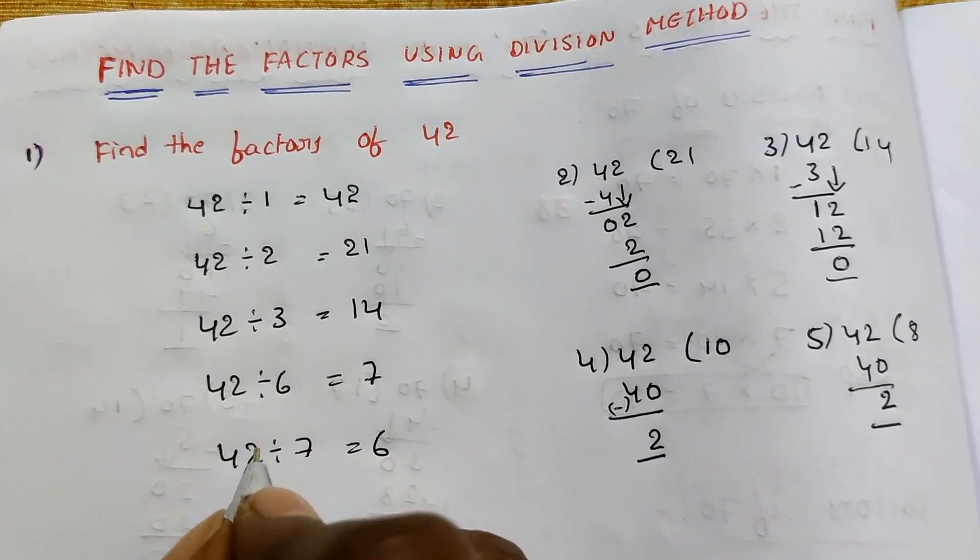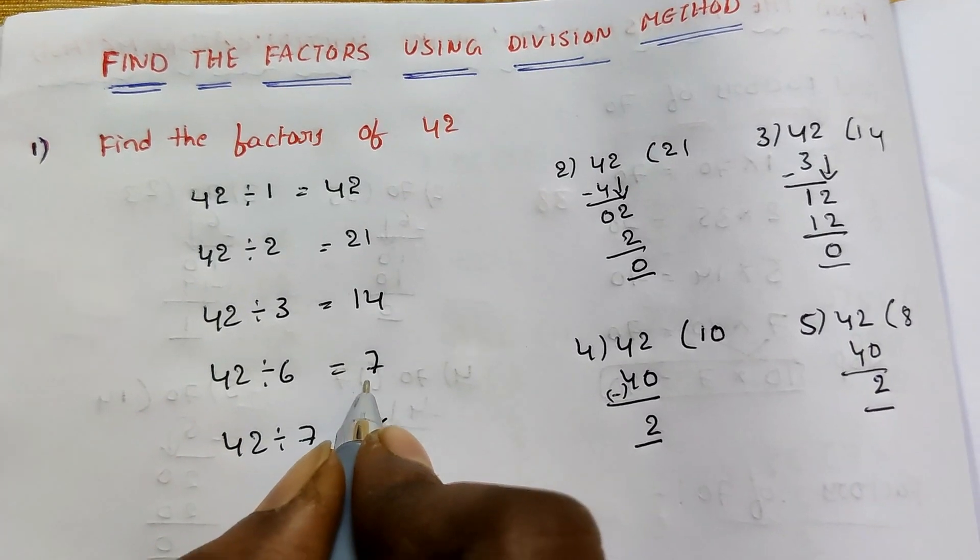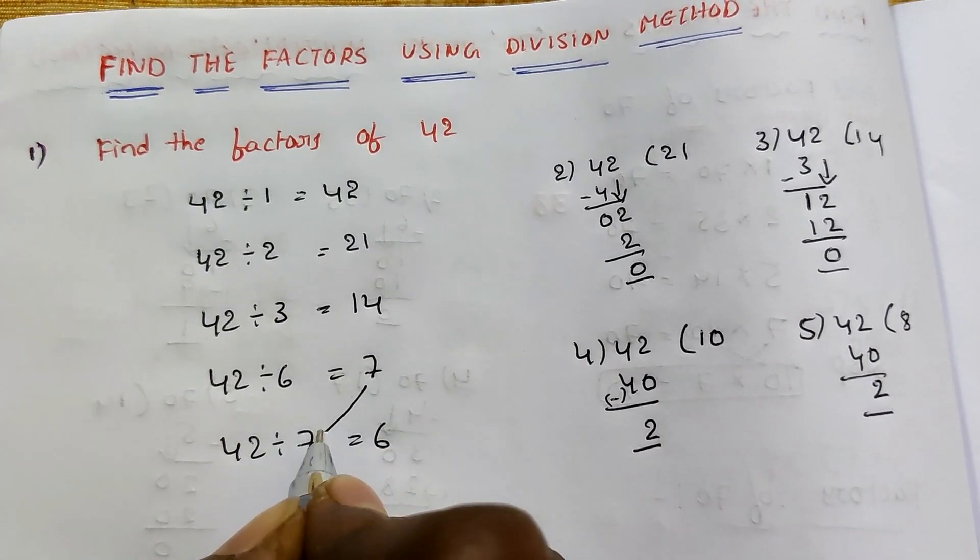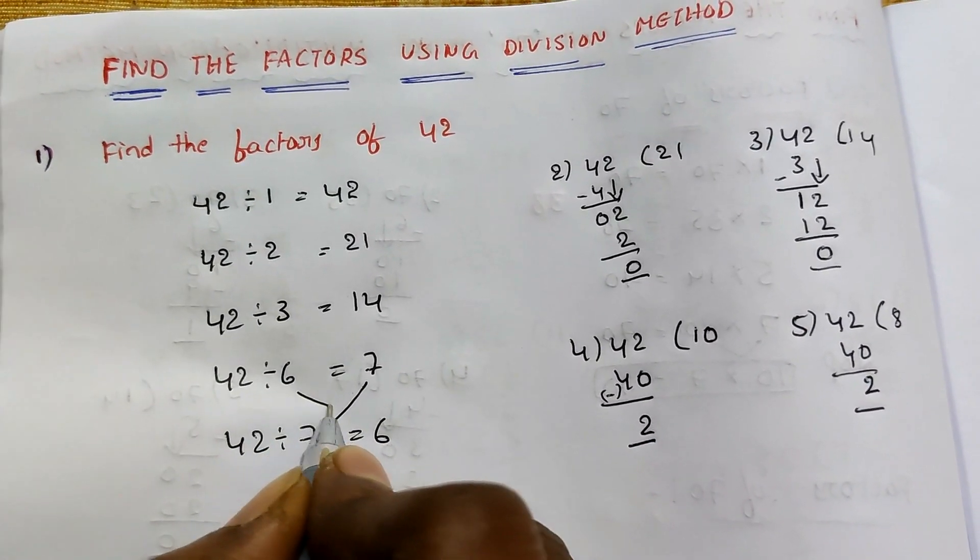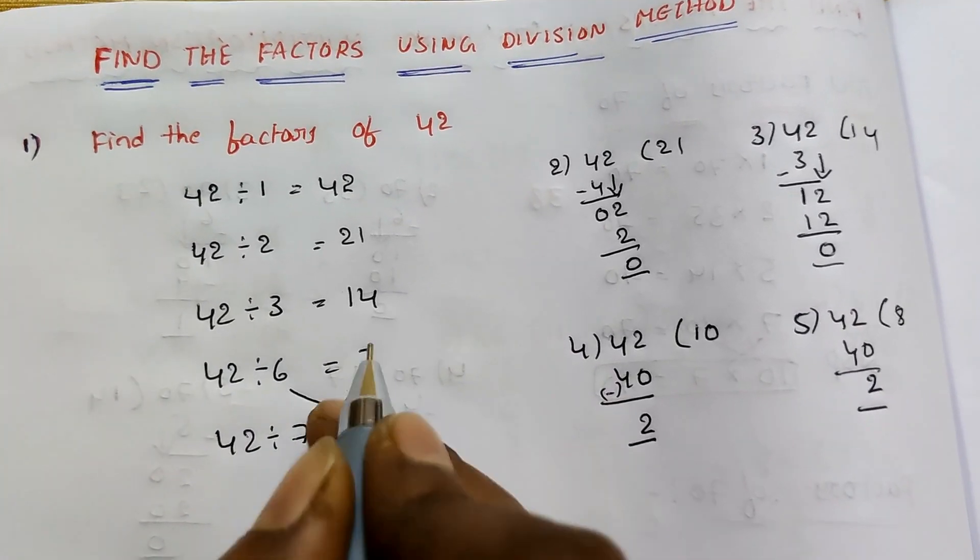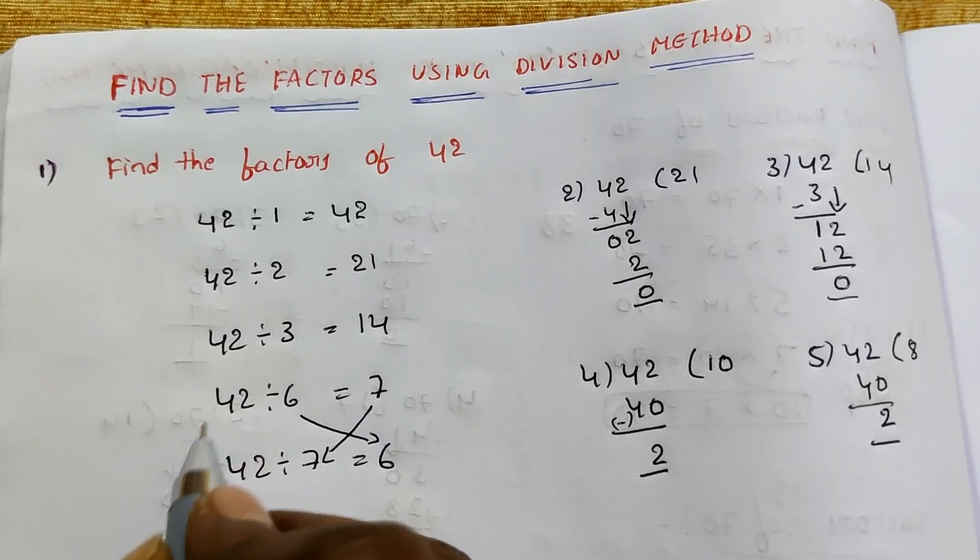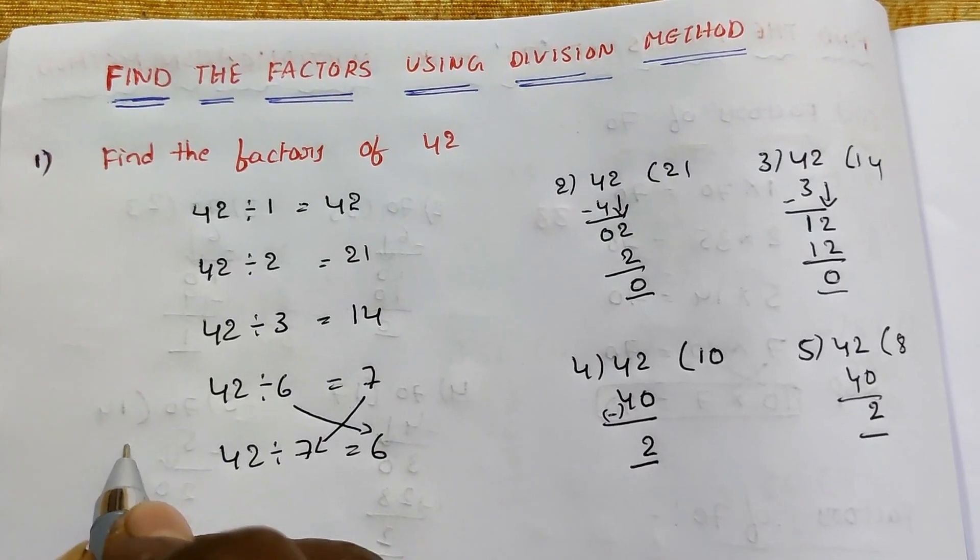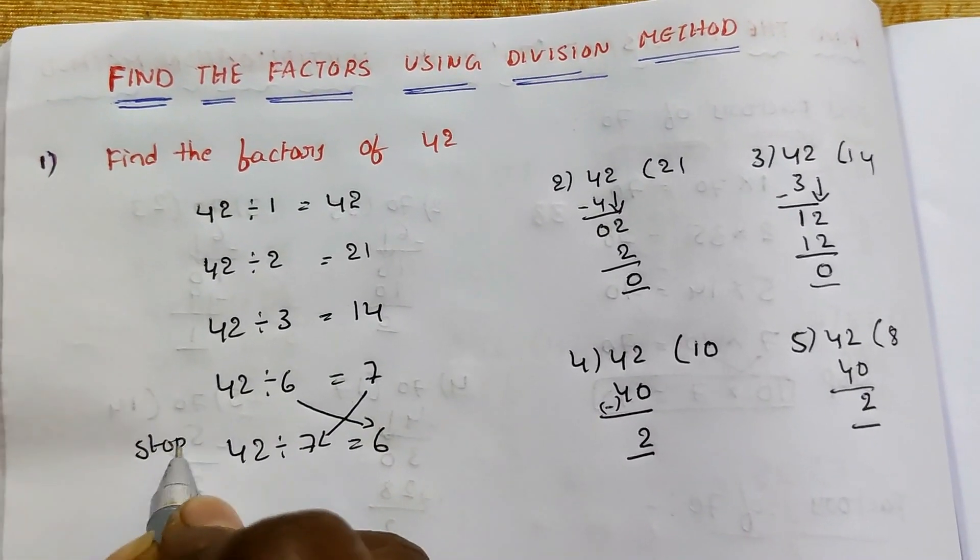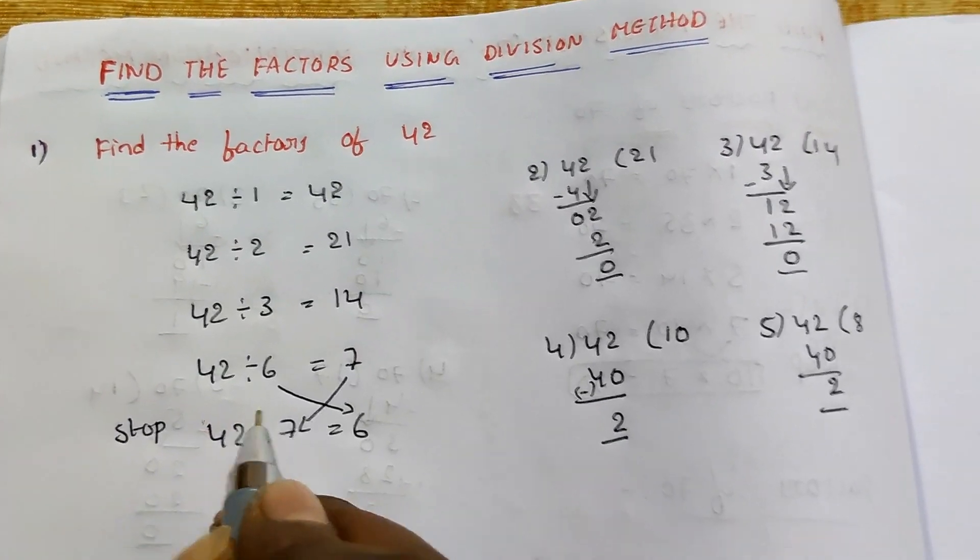Now check the pattern: divisor and quotient. Check divisor and quotient. Check the pattern. When they repeat, we stop.